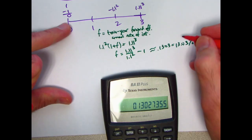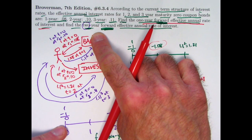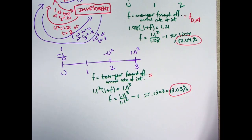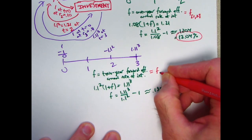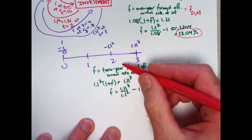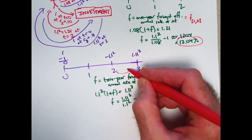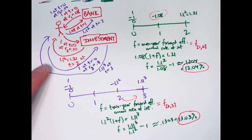That is correct. That is the two year forward effective annual rate of interest. Notationally, in the seventh edition of Broverman — they're trying to stay consistent with Society of Actuaries notation — they denote this by F sub the interval from two to three, to emphasize that it's a forward rate based on this term structure effective from time two to time three. So that's your introduction to the idea of a forward rate of interest.